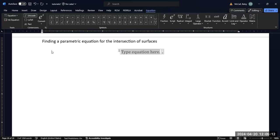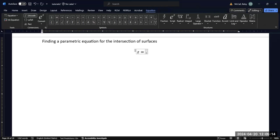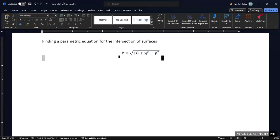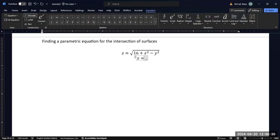Let's consider we have an equation z equals the square root of 16 plus x squared minus y squared, and we want to intersect that with the plane z equals 1 plus x.